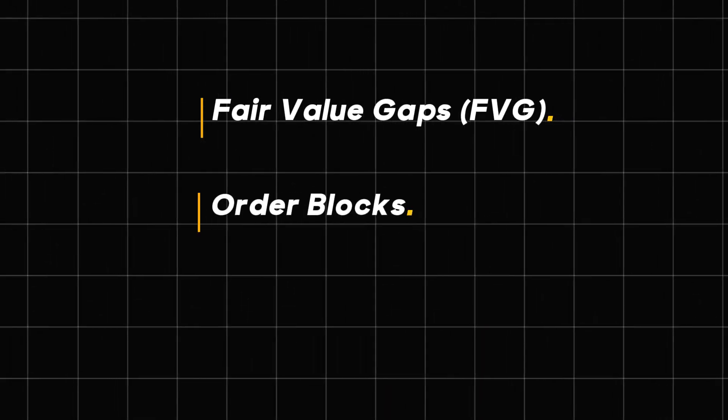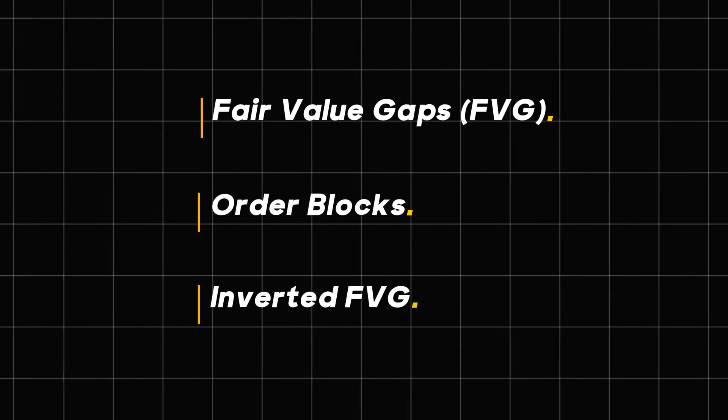Number two: PDRAs are special levels in the market. When you have determined a certain direction the market is going to go — let's assume price is supposed to go from point A to point B — there are areas in the market where high trading volume is, where the banks are placing their orders. These are called PDRAs. For example, we have the fair value gap, order blocks, inverted fair value gaps, liquidity sweeps, sell-side liquidity sweeps, buy-side liquidity sweeps, breakers, and others. All of these PDRAs are high-volume areas where you can place orders or look to trade in your desired direction after understanding the narrative of the market.